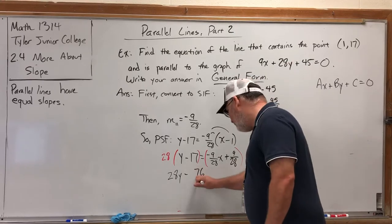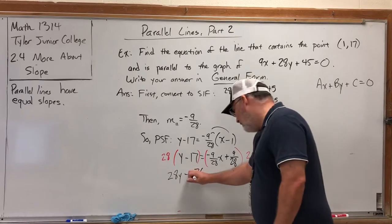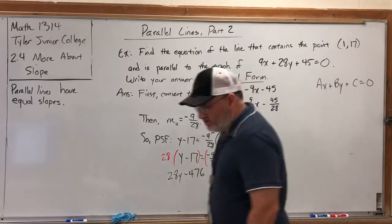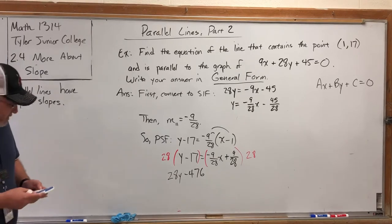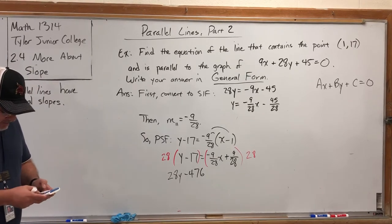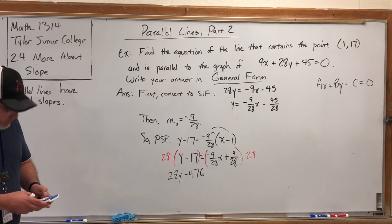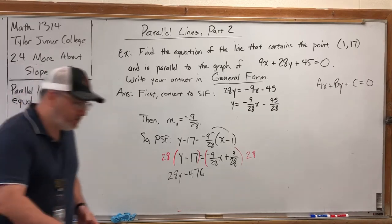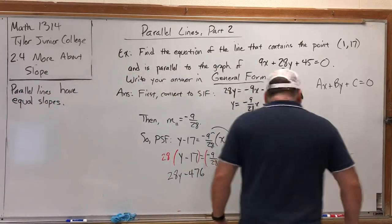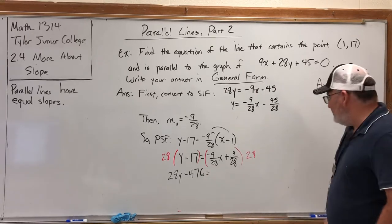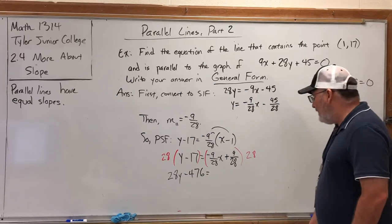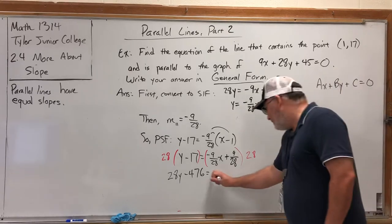There is a technique for multiplying numbers in your head, and with two-digit numbers it's pretty easy, but it is 476. If you're curious, shoot me a message. Equals—the right side is easier. The 28 distributes and cancels each denominator, so we have negative 9X plus 9.